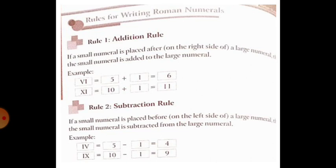The next topic is rules for writing Roman Numerals. The first rule is the Addition Rule: if a small numeral is placed after — that is, on the right side of — a large numeral, then the small numeral is added to the large numeral. For example, VI represents 6, because 5 plus 1 equals 6.